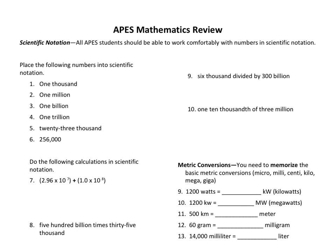The first section is a review of scientific notation. A thousand is one times ten to the third. A million is one times ten to the sixth. A billion is one times ten to the ninth. And a trillion is one times ten to the twelfth.